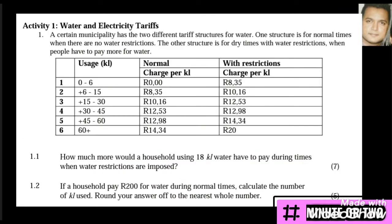This question is taken from the 2019 revision booklet, Department of Education. Looking at this activity, it's a table of tariffs and we are concentrating on 1.2, which is the second type of question asked in an examination. An amount is presented to us and we need to work backwards to get the amount of kilolitres used. We must note that they asked us to round off our answer to the nearest whole number. There are two different tariffs — one for normal and one for with restrictions. In question 1.2, it says 'during normal times,' so we will focus on the center column.